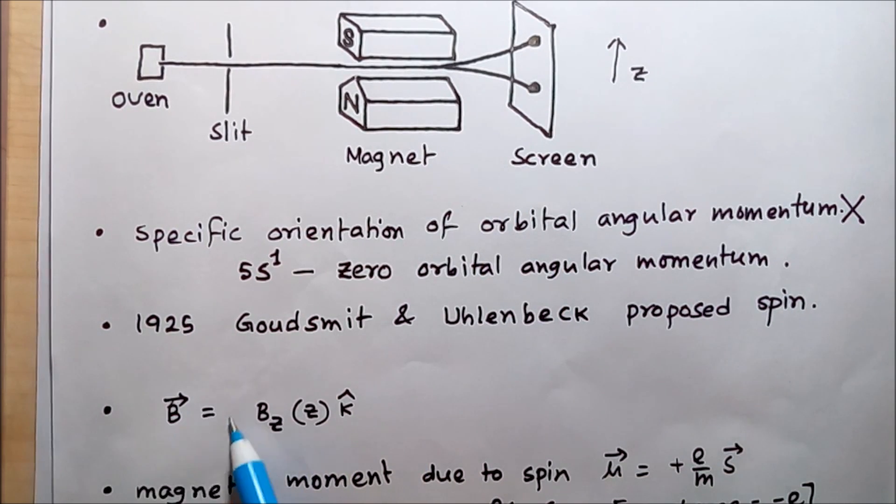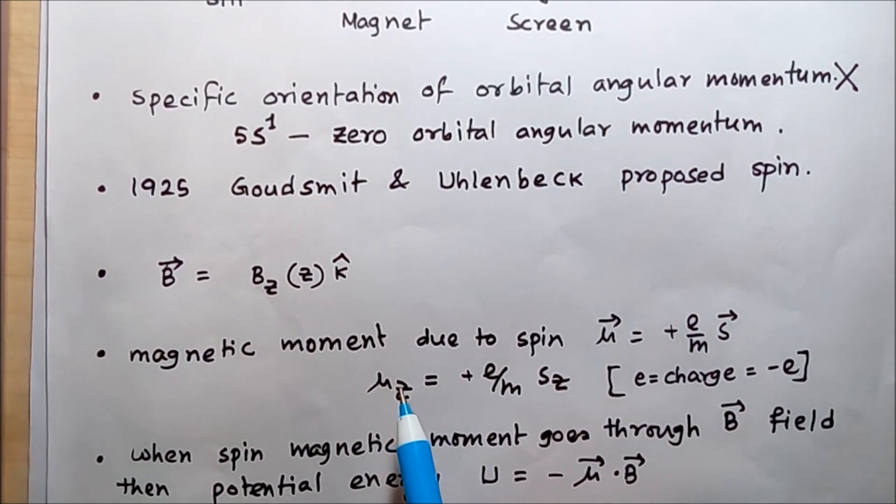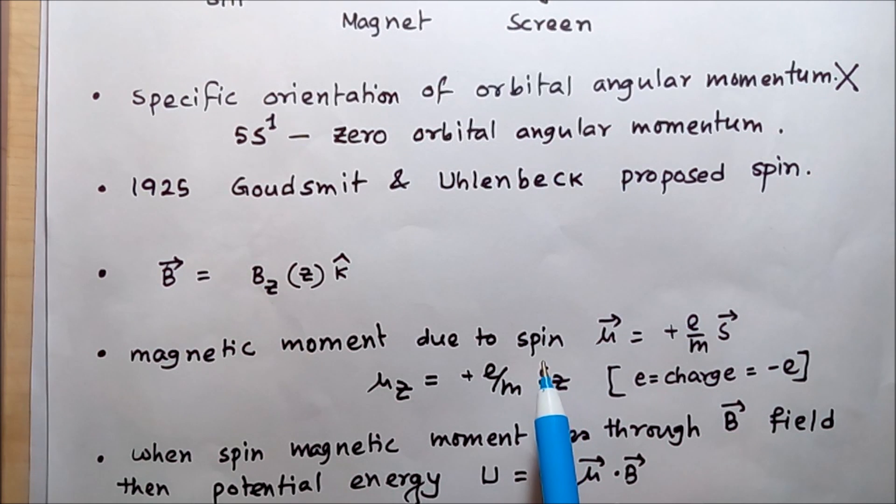We can write the magnetic field B as having only a z-component that is a function of z. If we visualize the spin of the electron as a spinning sphere of charge, the moving charge produces current. When charge moves it produces current, and current in a loop behaves as a magnet.